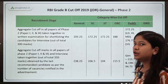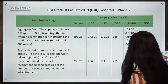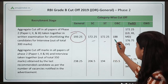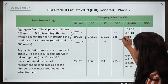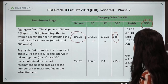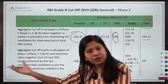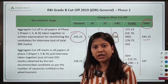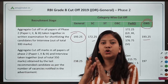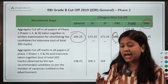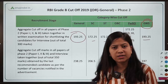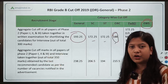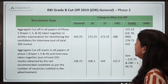In 2019, the level was again easy to moderate. The cutoff was approximately 193 to 193.25 for General, 172 for SC/ST, and 188 for OBC. For the EWS category, the cutoff is the same as the General category, as stated in the notification — no additional benefit is given to EWS candidates regarding qualification criteria, age limit, or cutoff.